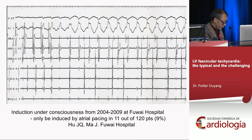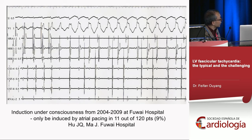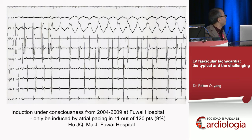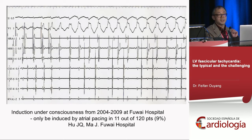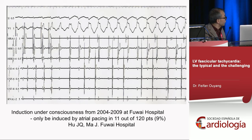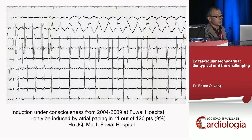The tachycardia was first demonstrated in the 1970s, showing that it could be induced by atrial pacing in all cases. In a study at our hospital in China with almost 120 cases, the tachycardia was induced by atrial pacing in only 9 to 10 percent. If you think of this as a fascicular tachycardia and count induction by ventricular pacing — for atrial pacing, you can induce the tachycardia as well.